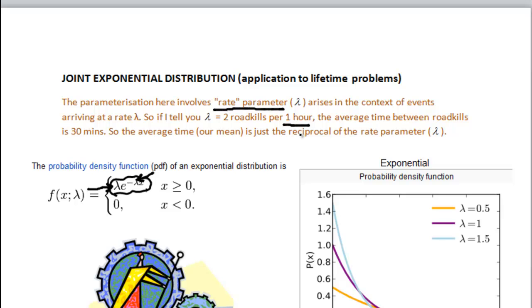Well, you would say that this is 30 minutes, because if there are two roadkills per one hour, then the time between the two roadkills is 30 minutes. So we have straight away established that the relationship lambda is just the reciprocal of our mean, which is the average arrival time. So these two, the mean and the rate parameter, are related to each other in that they are reciprocal of each other.